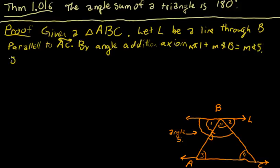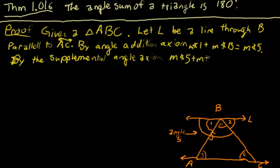By the supplemental angle axiom, measure of angle 5 plus measure of angle 2 equals 180 degrees.